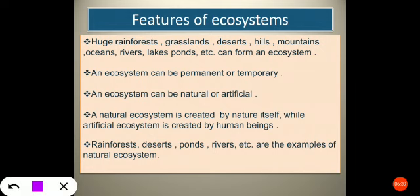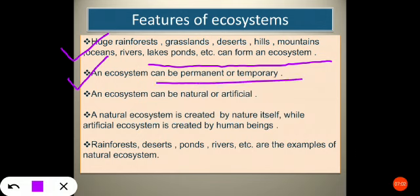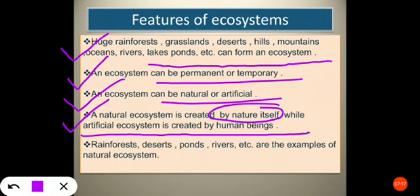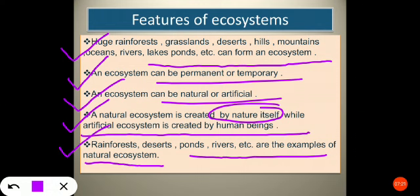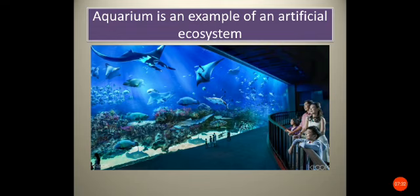Now let's discuss the features of ecosystems. Huge rainforests, grasslands, deserts, hills, mountains, oceans, rivers, lakes, ponds, etc. can form an ecosystem. An ecosystem can be permanent or temporary. An ecosystem can also be natural or artificial — a natural ecosystem is created by nature itself, while an artificial ecosystem is created by human beings. Rainforests, deserts, ponds, and rivers are examples of natural ecosystems. An aquarium is an example of an artificial ecosystem.